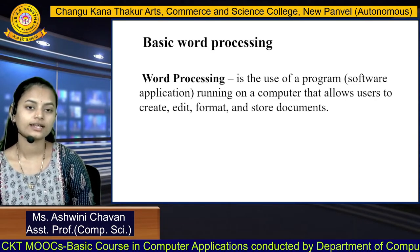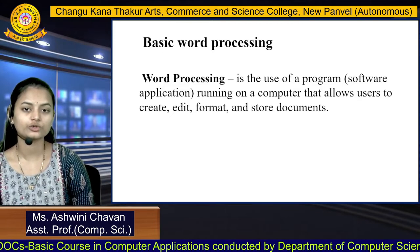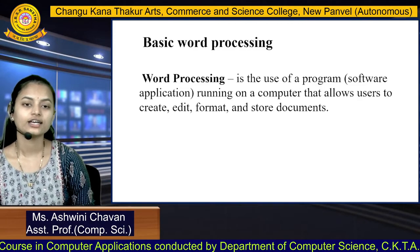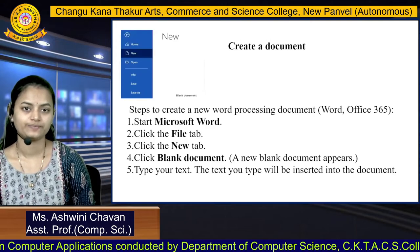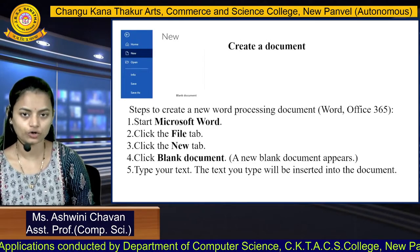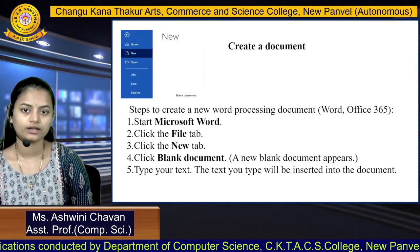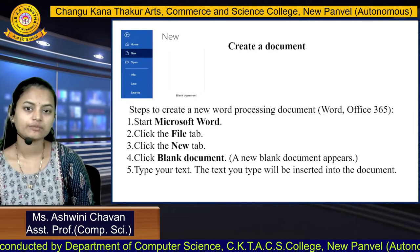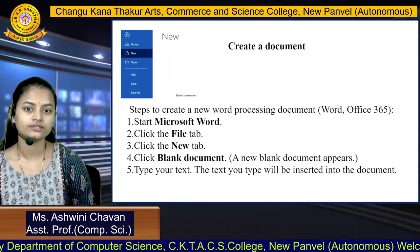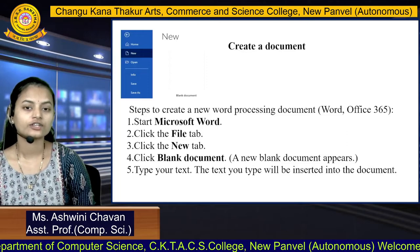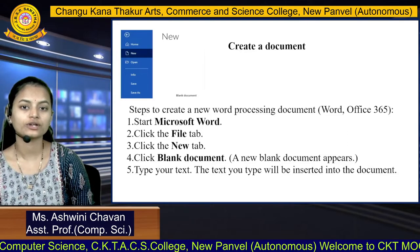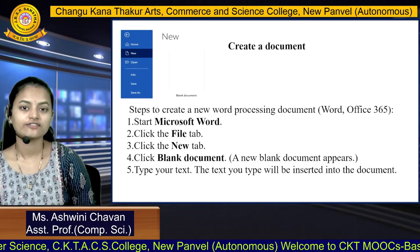Basic word processing is the use of a program running on a computer that allows users to create, edit, format, and store documents. To create a document, the very first step is to start Microsoft Word. After Microsoft Word opens, click on the File tab.